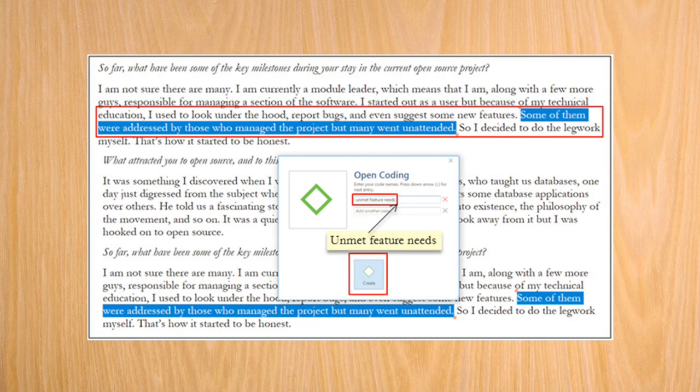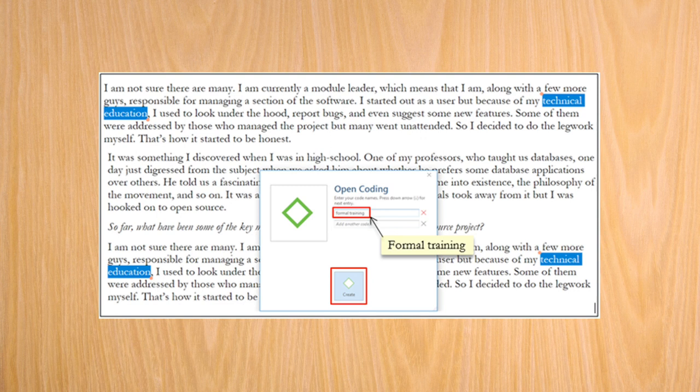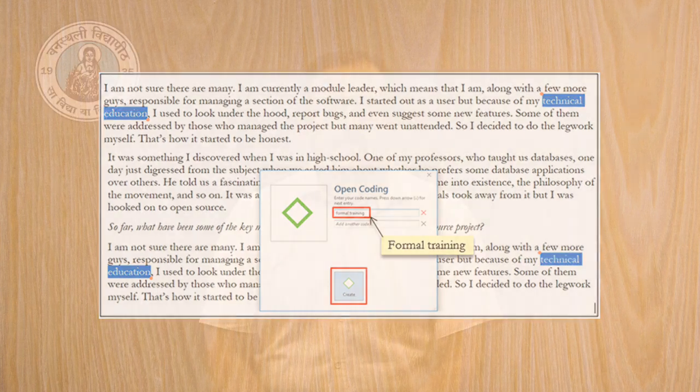Let us continue the open coding process. In response to the second question, the developer states that they made several suggestions about adding more features, but many went unattended. That prompted the developer to create these features on their own. The exact text that I am referring to is, some of them were addressed by those who manage the project, but many went unattended. I am going to select this snippet and code it as unmet feature needs. In the same answer, the respondent talks about their technical education. I am going to select just those two words and code them as formal training. So, with these examples, you can see how one can attach interpretations to different sections of text.